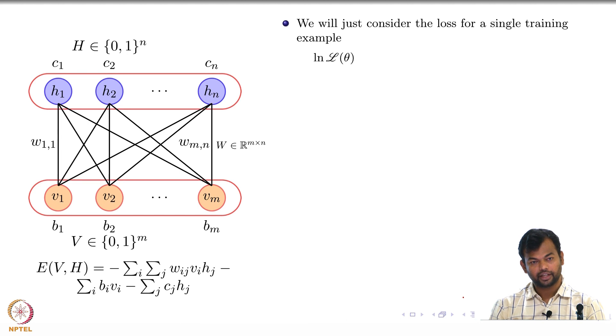We want to compute the gradient of the log likelihood with respect to the parameters of our model. Let us just consider the loss with respect to a single training data. Remember the loss is a summation over all the training examples, I am just going to consider it for a given single training example.